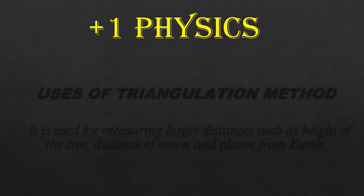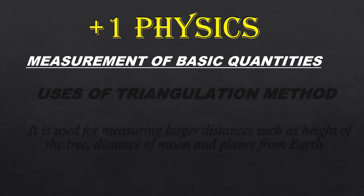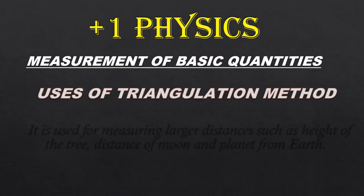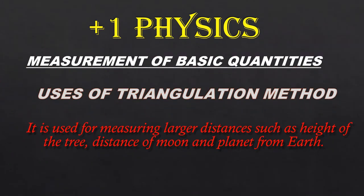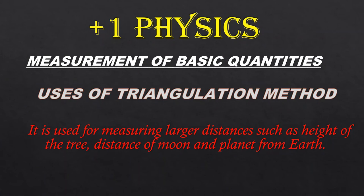Hello students, today we are going to see about plus one physics measurement of basic quantities, specifically the uses of triangulation method. It is used for measuring larger distances such as the height of a tree, distance of moon and planet from Earth. This is the definition of the triangulation method and now we are going to see the explanation.